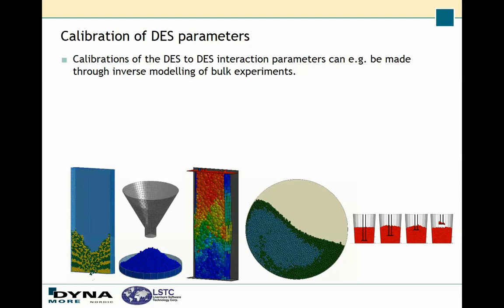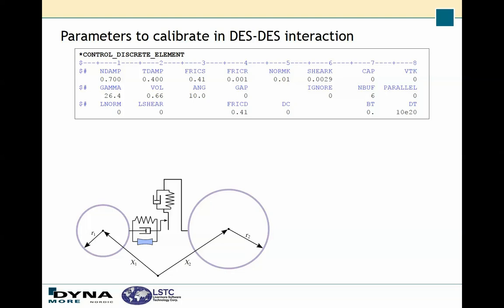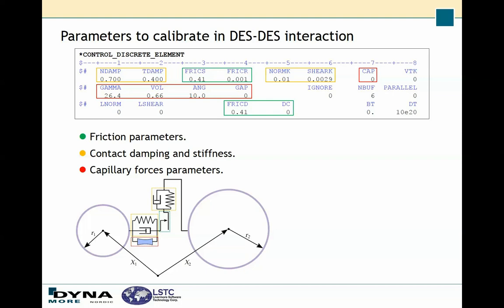The parameters active in the sphere-to-sphere interaction are found under the keyword control_discrete_element. You can categorize these parameters into friction parameters, contact damping and stiffness parameters, and also parameters dealing with capillary forces.